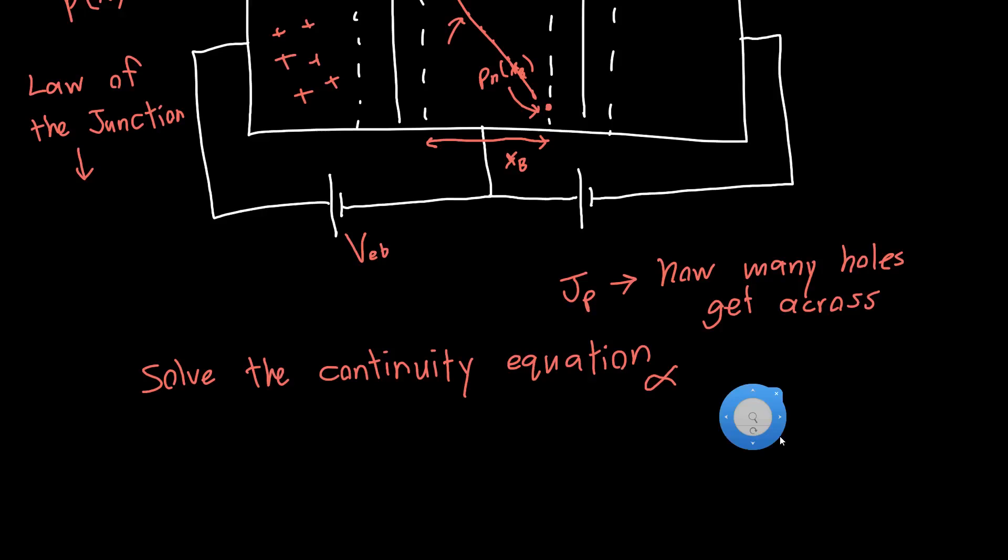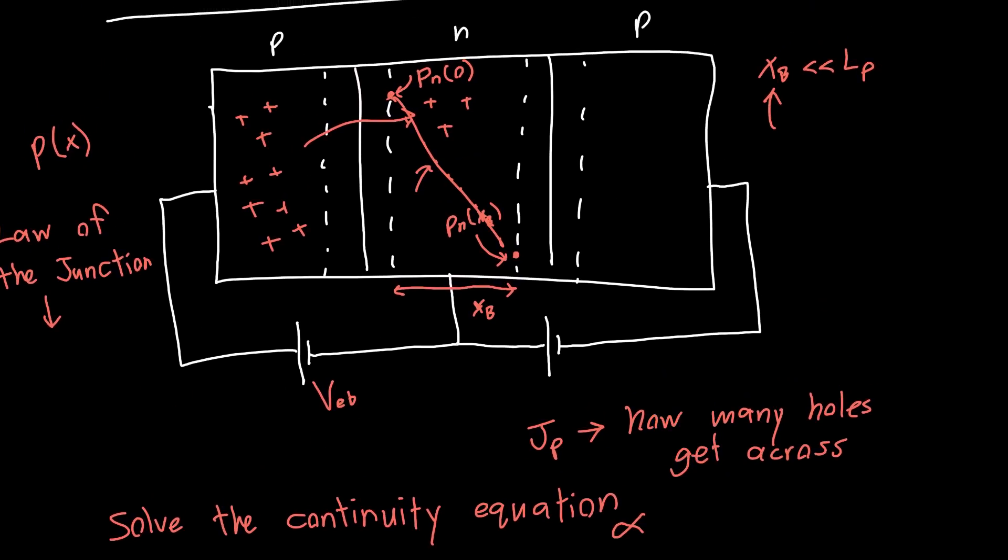But here it's not too bad. So we just want to solve for holes. So we want the continuity equation in terms of delta P, the minority carrier concentration in the base. And we said that all the electric fields were confined to these depletion regions. And this means that we can ignore the drift current anywhere inside this N region.